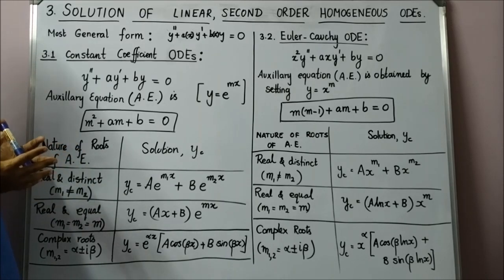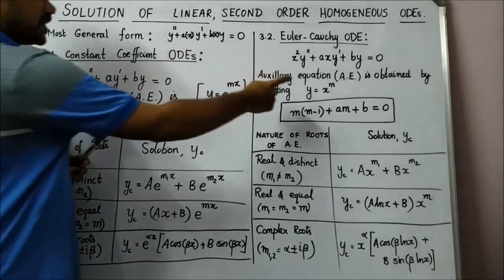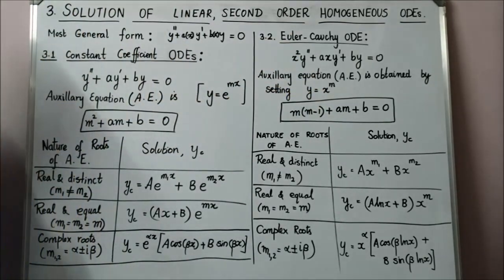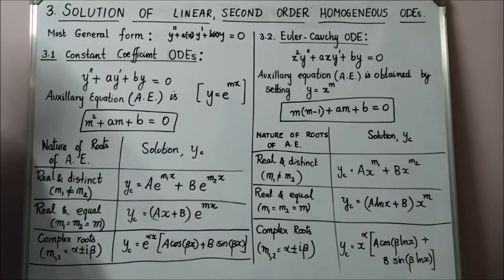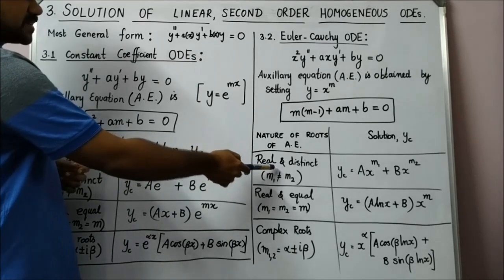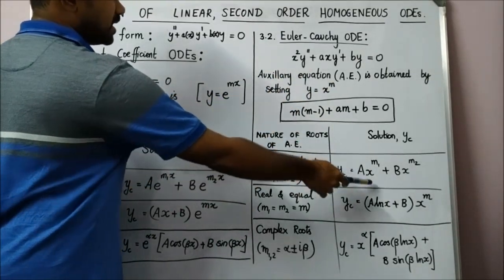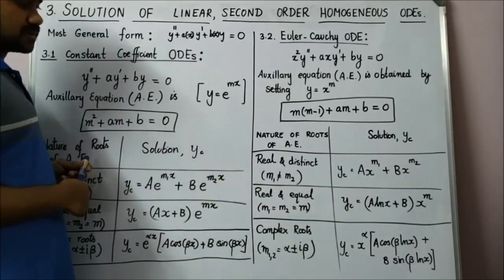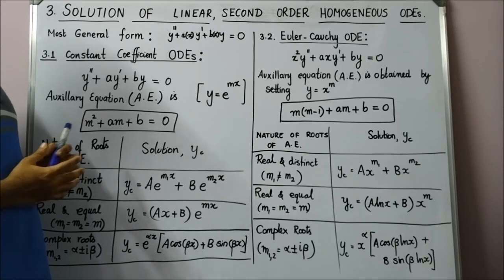How do you get the auxiliary equation for Cauchy-Euler? By thinking about what kind of solutions satisfy this equation. After looking at the equation, you know that y = x^m would be the solution. So you take y = x^m, substitute into the ODE, and arrive at the auxiliary equation: m(m−1) + am + b = 0. If the roots are real and distinct, the solution is A·x^(m1) + B·x^(m2). If the roots are real and equal, the solution is (A·ln x + B)·x^m.